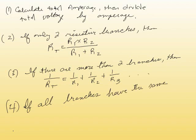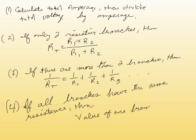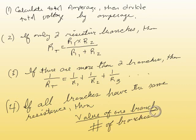Fifth: if all branches have the same resistance, divide the value of one branch by the number of branches. Remember — parallel circuit total resistance must always be smaller than the smallest resistive branch.